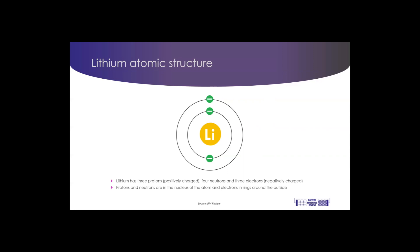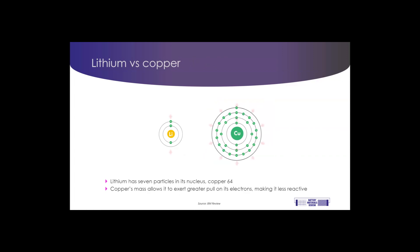Now, two of those electrons are in an outer ring or orbit close to the nucleus, while the other is further out in another ring. But lithium only has a small nucleus with three protons and four neutrons, compared to a metal like copper,